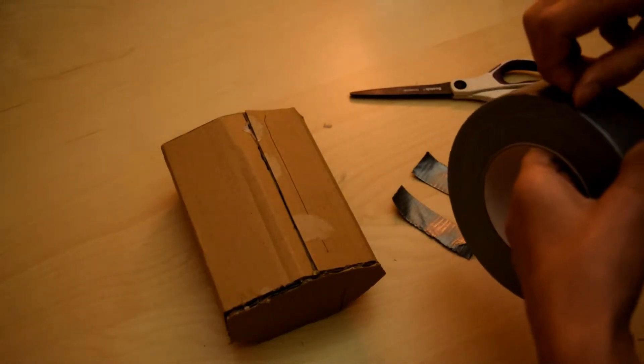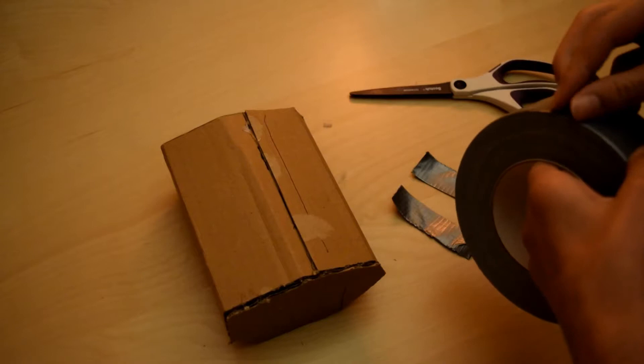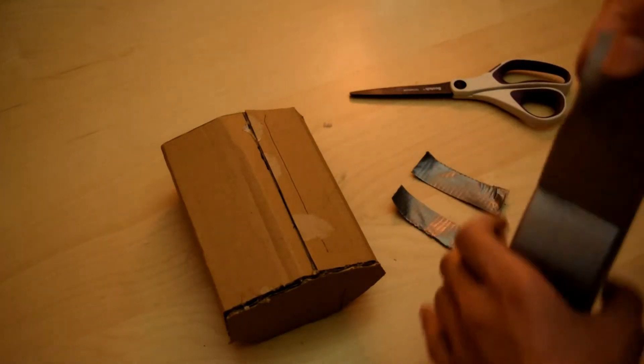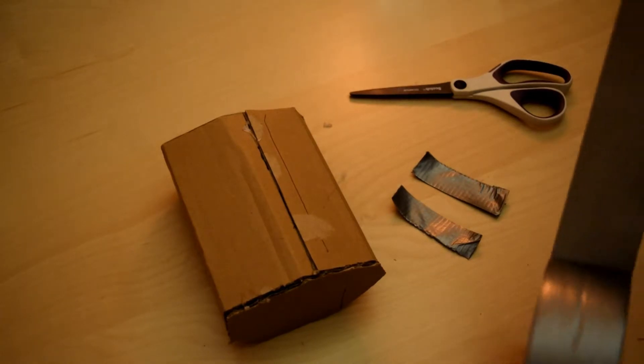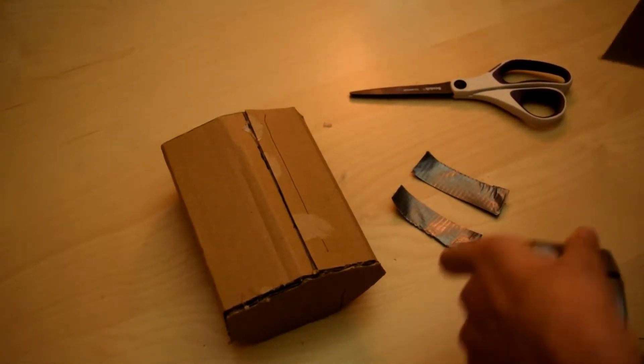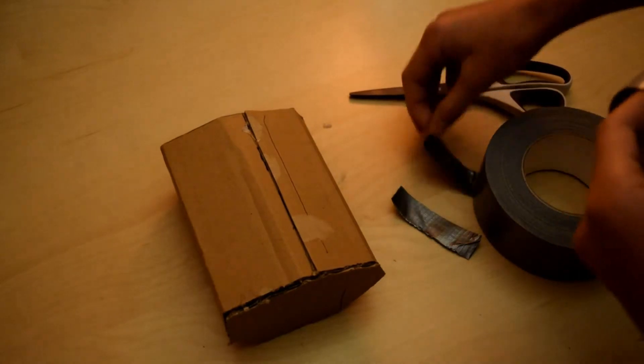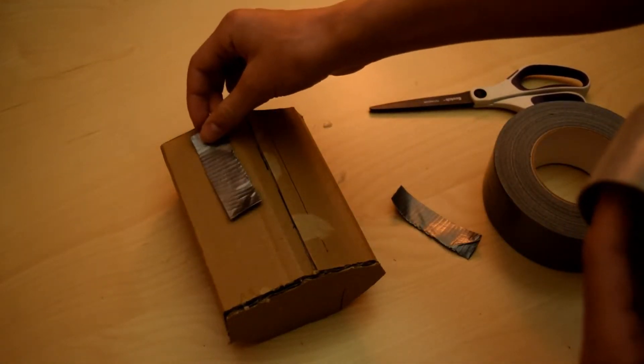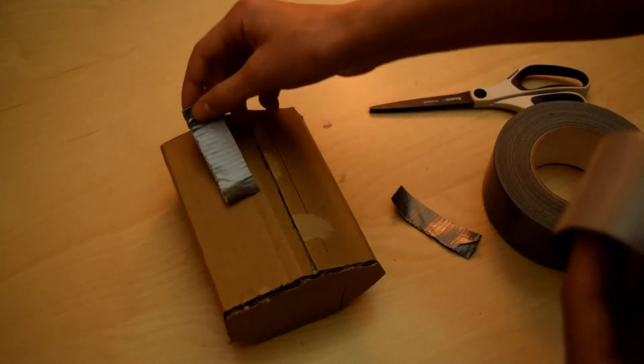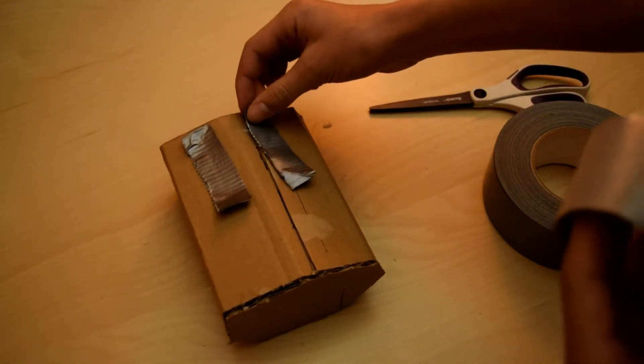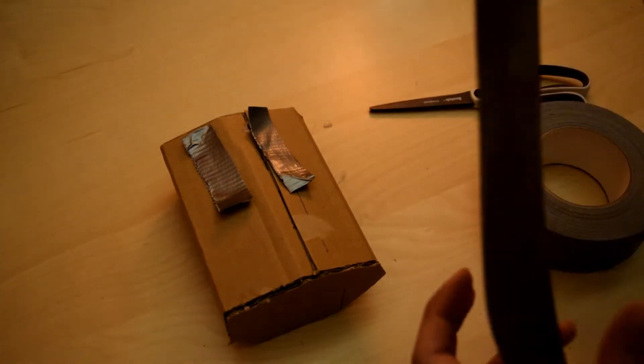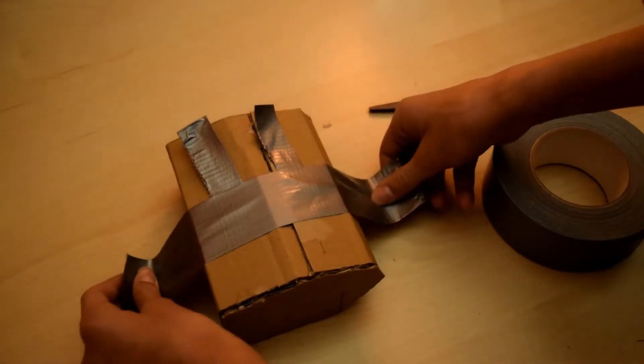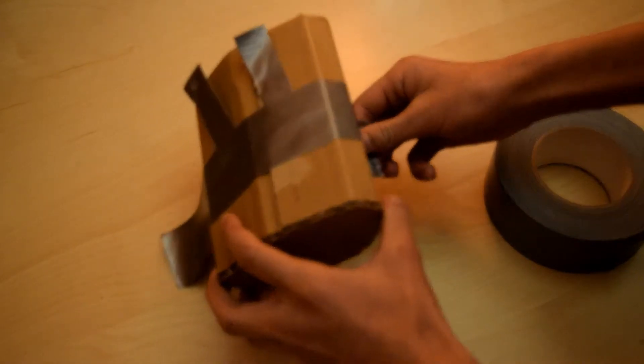Now we just need to attach them to the holster itself. Take your duct tape and take a nice long strip that's going to wrap all the way around the holster. Take your two belt loops and place them on the holster where you want them to go. Then take your duct tape, place it on, and wrap it around.